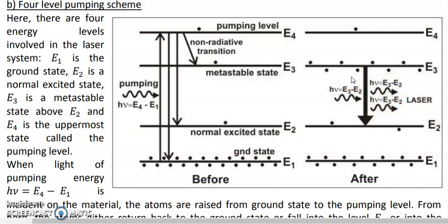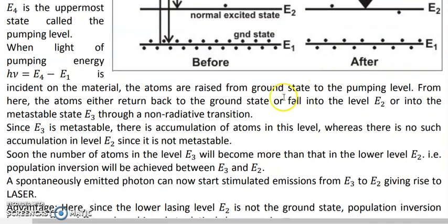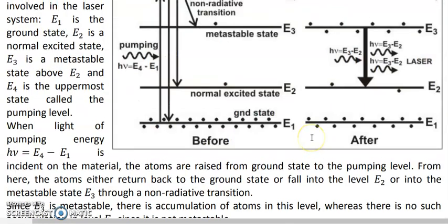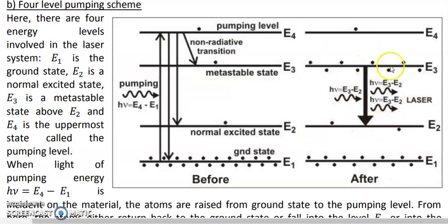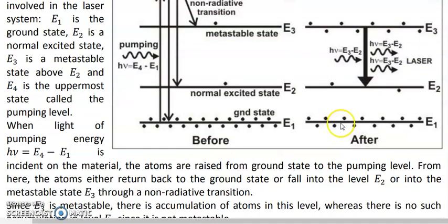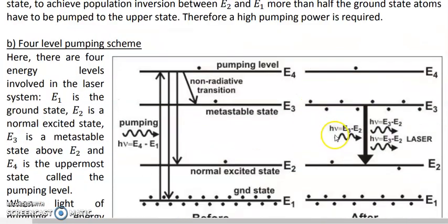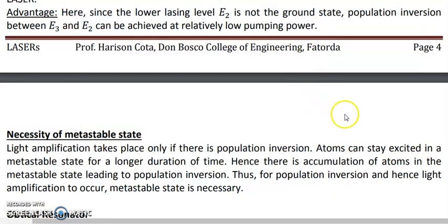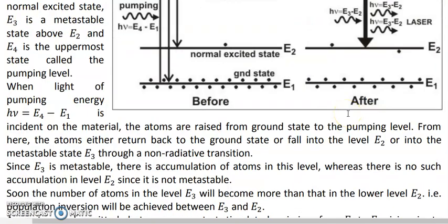The four level pumping scheme does not require very high pumping power. This is because population inversion is achieved between the metastable state E3 and the non-metastable normal excited state E2 — not between E3 and the ground state E1. Therefore, only a few atoms need to be pumped up to achieve population inversion between E3 and E2, making the four level pumping scheme better than the three level scheme.